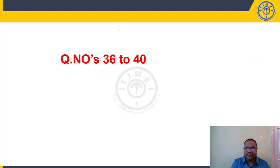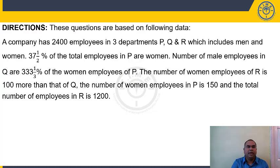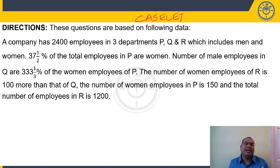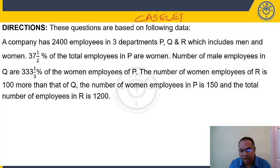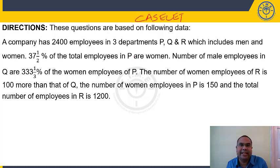Questions 36 to 40 are caselet questions — the DI type I warned about. For caselets, you must first convert the verbal information into a structured table or diagram, then solve the questions. Remember: attempt caselet only if all other questions are done and time remains.